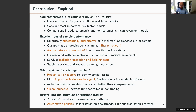Our arbitrage strategies achieve annual out-of-sample Sharpe ratios of four, annual returns of around 20% with volatility less than 6%. We show they are uncorrelated with conventional risk factors for market movements, and importantly, they survive realistic transaction and holding costs. Results are stable over time and robust to all choices and tuning parameters.